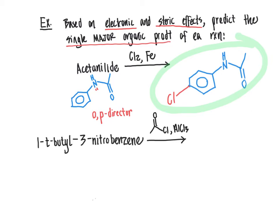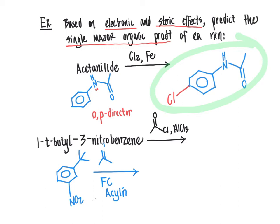For the second example, based on electronic and steric effects, we predict the single major product. We draw 1-tert-butyl-3-nitrobenzene with the tert-butyl group at position 1 and the nitro group NO2 at position 3. We are performing Friedel-Crafts acylation because we have an acyl halide — a carbonyl group directly bonded to an alkyl group and also to a halogen. Aluminum chloride acts as catalyst, creating a very electrophilic carbonyl carbon. Importantly, there is no carbocation rearrangement in acylation, so there will always be a direct bond between the carbonyl group and the aromatic ring.